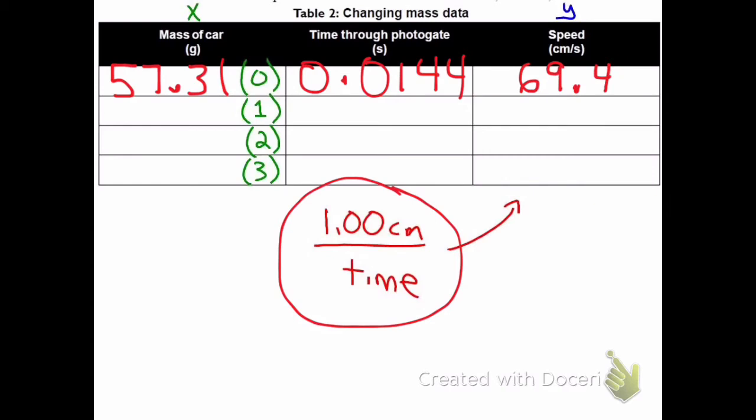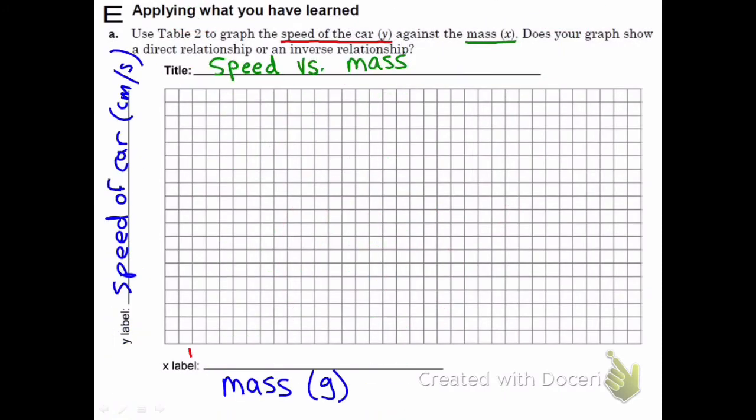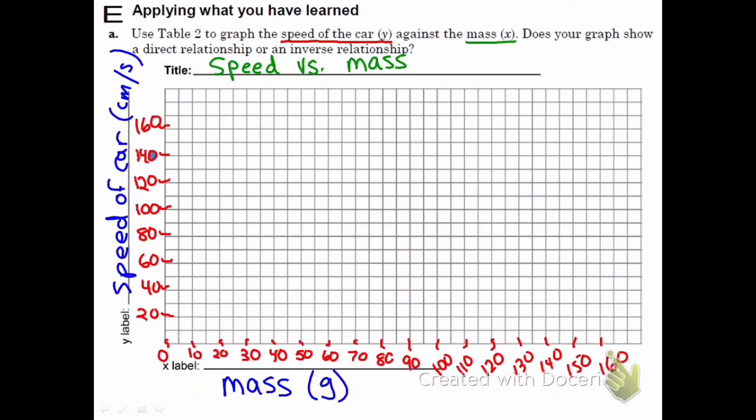Then you're going to graph it with mass of the car on the x-axis and speed on the y. That's going to look like this. Mass and speed. And we're going to set up our axes very similarly. Speed on the y is actually exactly the same, counting by tens, 10, 20, 30, and so forth.